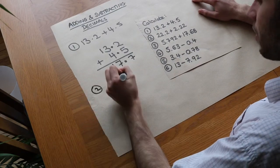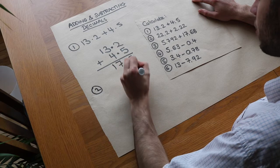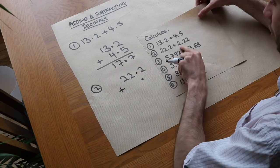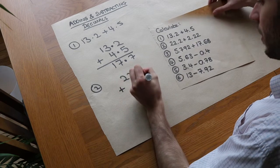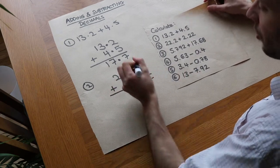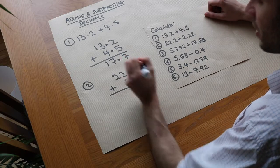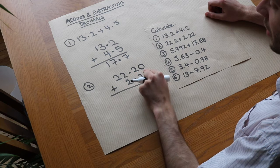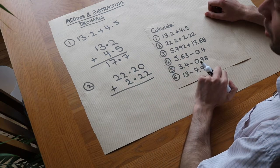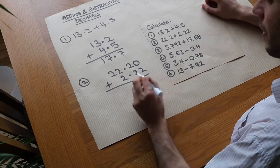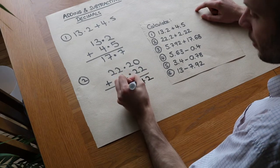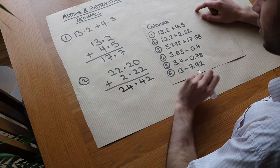Let's do the second one. We've got 22.2 plus—make sure the decimal point is in the same place—2.22. If we want, we could make that hundredths digit 0, because 22.2 is the same as 22.20. Then we can add in the same way: that's 2, that's 4, put the decimal point in the same place, 4, and that is 2.